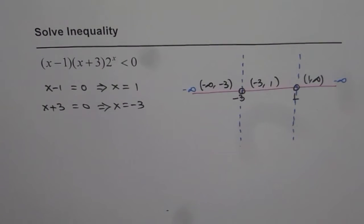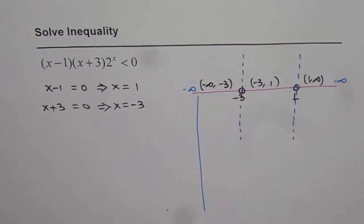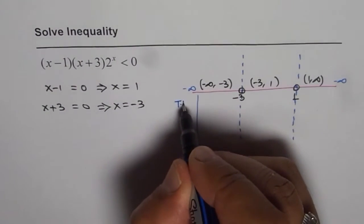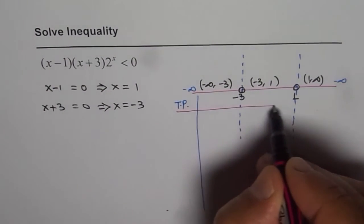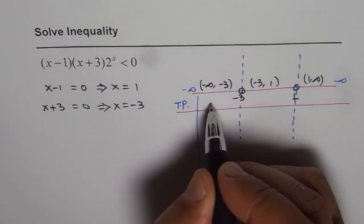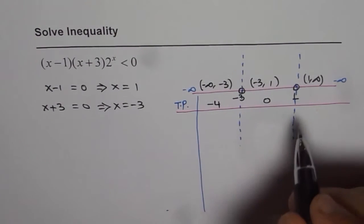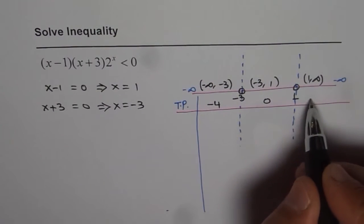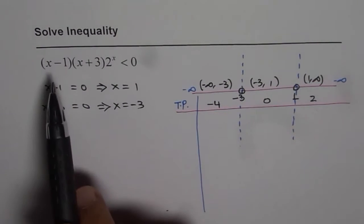Now what we will do is that we will take some test points and then test what is the solution. So test points could be between minus infinity to minus 3, let's take test point as minus 4. In this interval let's take 0 as our test point. 1 to infinity let's take 2 as our test point.